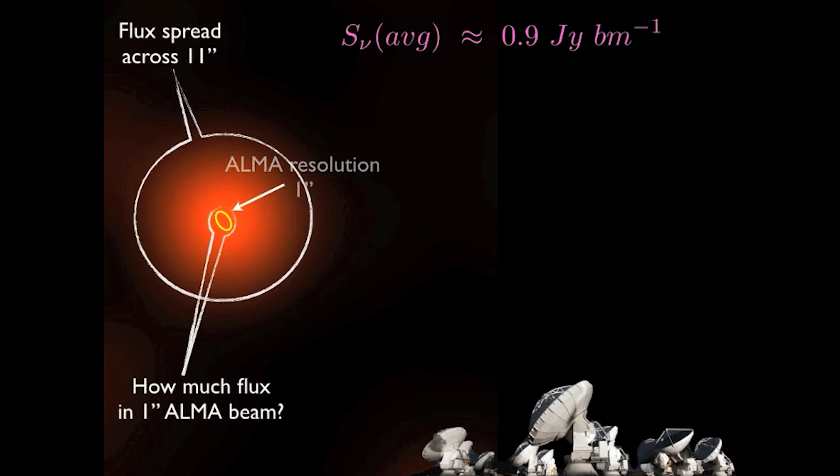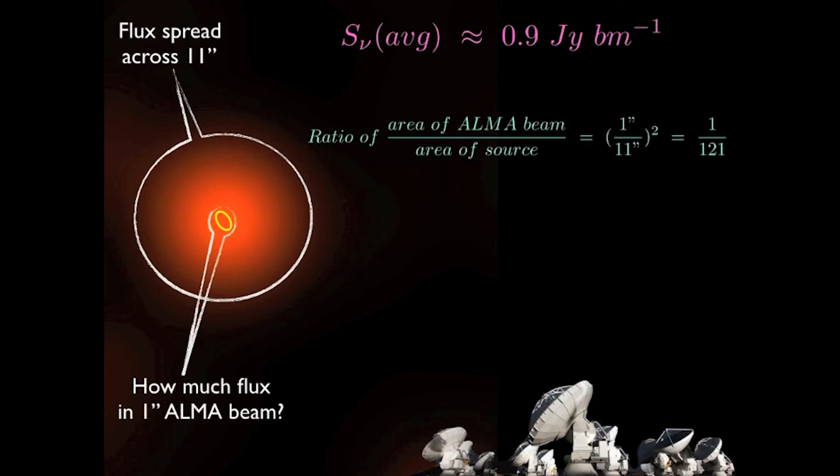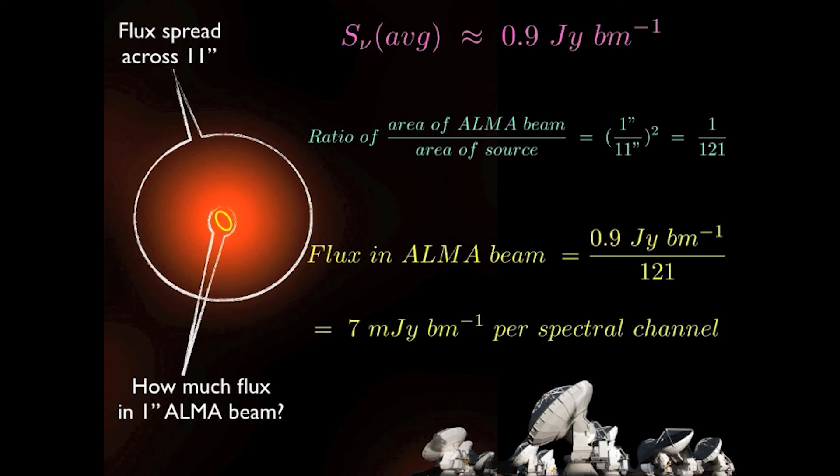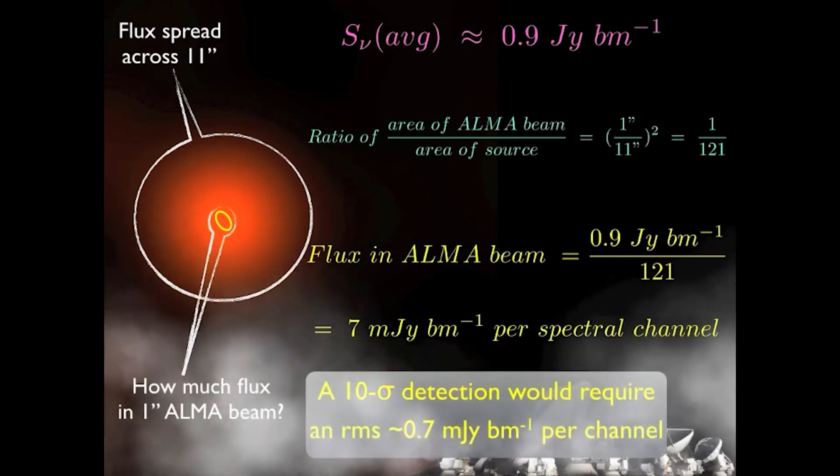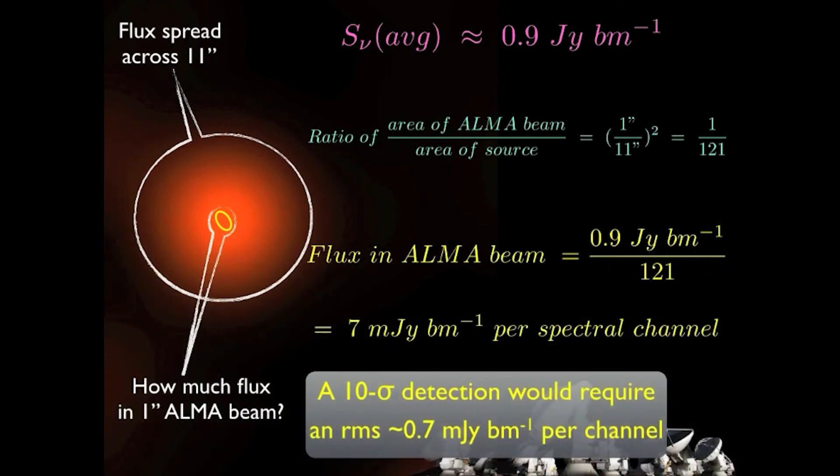In the worst case, the emission is spread evenly over the 11 arcsecond IRAM beam, or over 121 ALMA beams. In this case, the expected flux density would be about 7 millijanskys per beam. A 10 sigma detection per spectral channel would require a sensitivity of 0.7 millijanskys per beam.